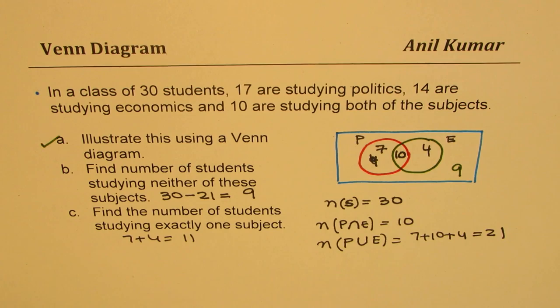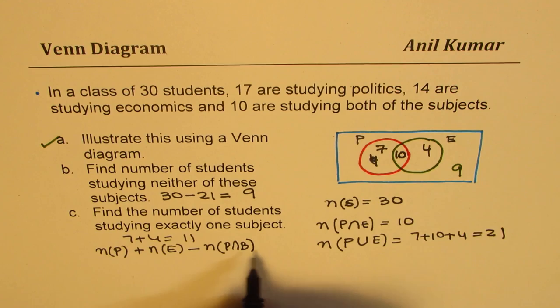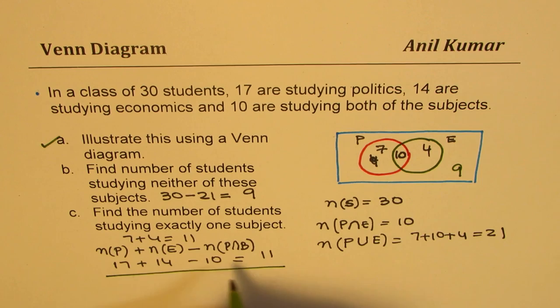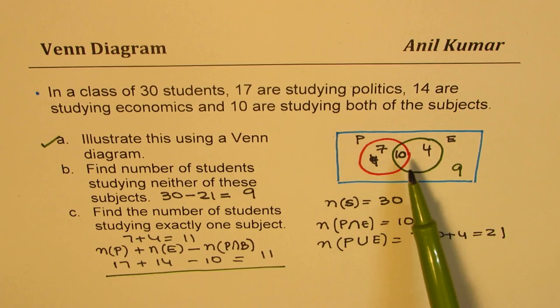Another way to do this will be total number of students who are doing politics plus number of students who are doing economics take away their intersection. So that will give you the answer directly without even looking at the Venn diagram, correct? So if you fill in the values, which you know is 17 plus 14 minus 10, you will get your answer. 21 minus 10 as 11. Perfect. So that is how you will do even without looking at the Venn diagram. Does it make sense to you? So we have used the principle of inclusion and exclusion. So this 10 is included twice, so it has to be excluded.